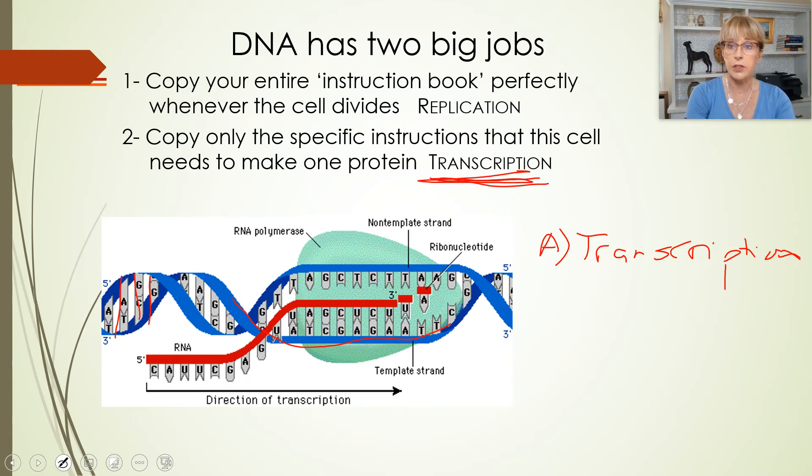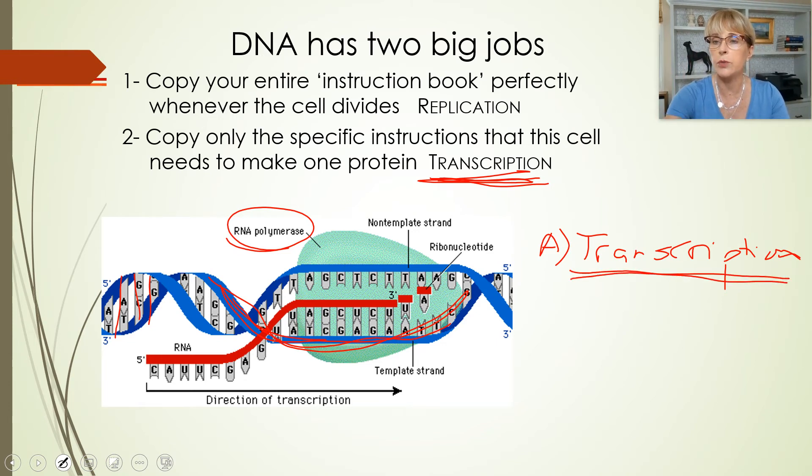Transcription is going to happen inside of the nucleus because that's where the DNA always stays. And in transcription, an enzyme called RNA polymerase is going to make a little, I often say copy, but technically it's a complement, right? It's not a copy of it, it's the match to it of one gene, one gene in that chromosome. And making a copy of just one gene, just the instructions for making one protein is known as transcription.